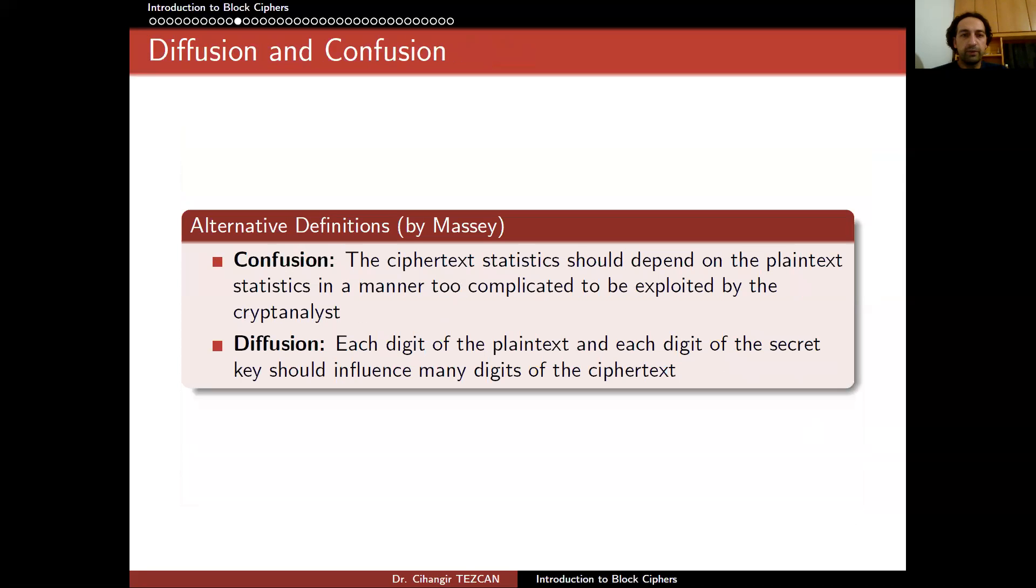Massey actually simplified these definitions and said that confusion is the ciphertext statistics should depend on the plaintext statistics in a manner too complicated to be exploited by the cryptanalyst. And for diffusion, each digit of the plaintext and each digit of the secret key should influence many digits of the ciphertext. So we will understand these topics when we are going to see concrete examples of block ciphers and how this confusion and diffusion layers are actually designed in practice.